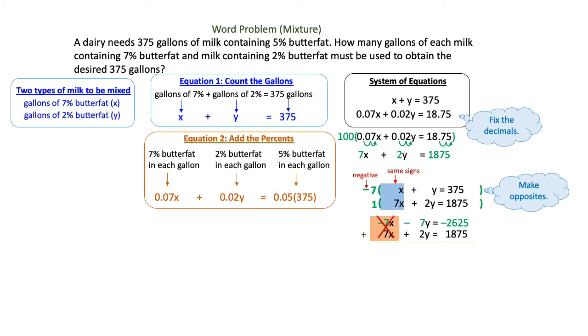My x terms are going to cancel because a negative 7 and a positive 7 cancel. That allows me to add my y terms together. Negative 7 plus 2 is negative 5y. And I can also add my constants together. Negative 2625 plus 1875 is negative 750.